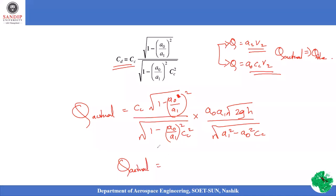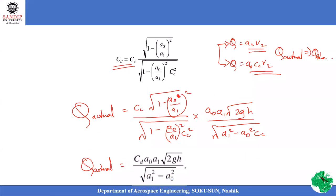On simplifying, the actual discharge for an orifice meter is Q_actual = Cd × A0 × A1 × √(2gh) / √(A1² - A0²). This is the actual discharge expression when using an orifice meter.